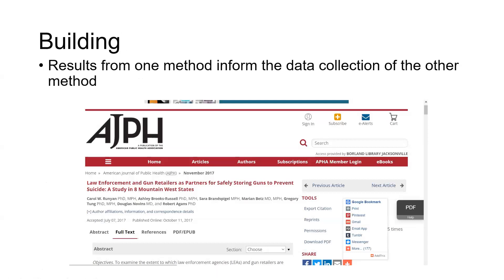The next type of method-level integration is building, which occurs when one method informs the data collection of the subsequent method. Going back to the law enforcement and gun retailers paper published in AJPH — a mixed methods project of qualitative leading into quantitative — the qualitative grounded theory-based interviews and their results really helped define the domains, establish the questions, and establish the terminology for the survey that was developed and ultimately administered to law enforcement and gun shops and retailers in the Mountain West. That's the results from qualitative really informing the data collection instrument of the quantitative piece.